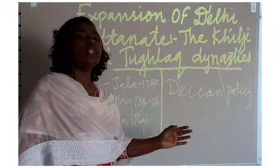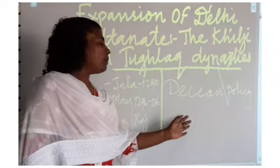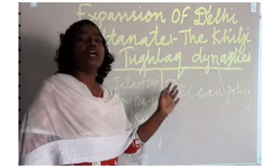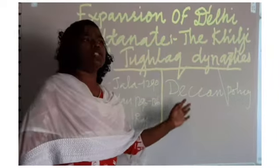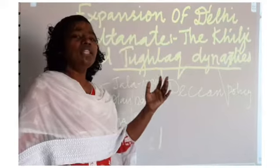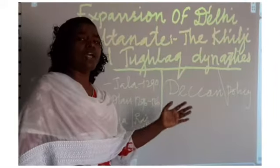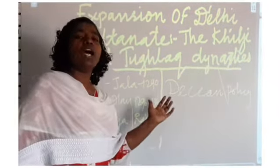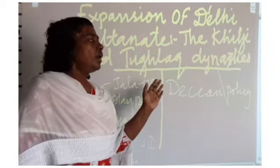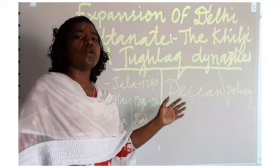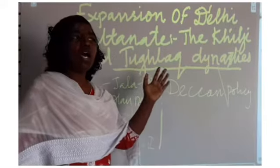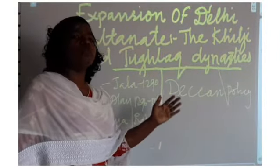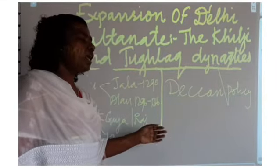After Alauddin Khalji, he stopped the Mongols from invading India. Whoever invaded India, the leaders of the Mongols were captured and killed by being stamped under the foot of an elephant. There was a mass massacre done by Alauddin Khalji against the Mongols. To watch over Mongol invasions, he established different forts, maintained a huge standing army, and maintained a spy system.